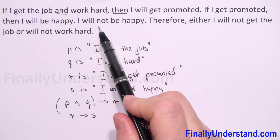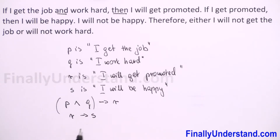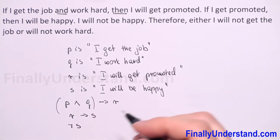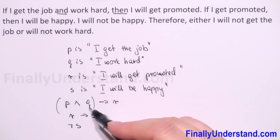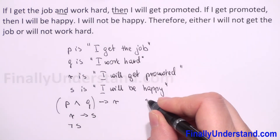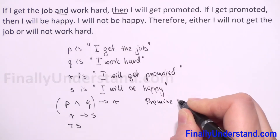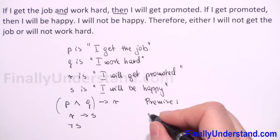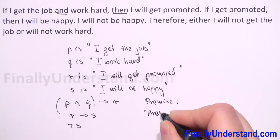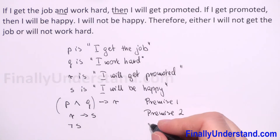Next, we have another conditional statement: R then 'I will be happy,' which is S. So the second premise is: R → S. Next, we have 'I will not be happy,' which is the negation of S. This is our third premise: ¬S. So we have our first, second, and third premises written in symbolic form.